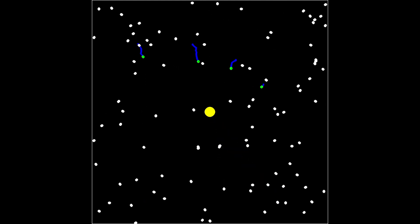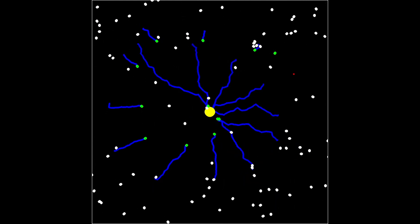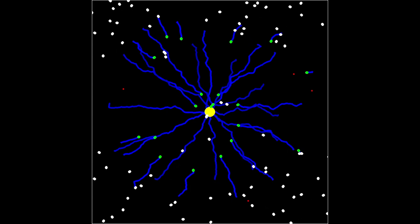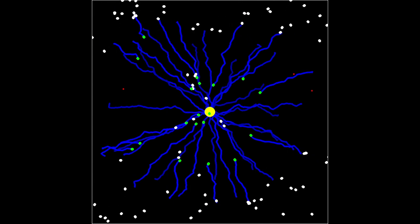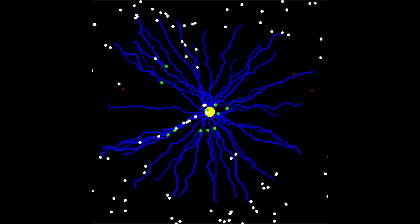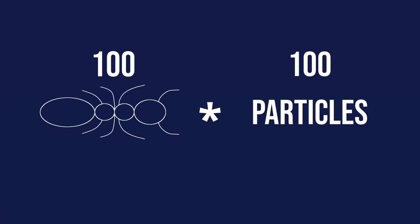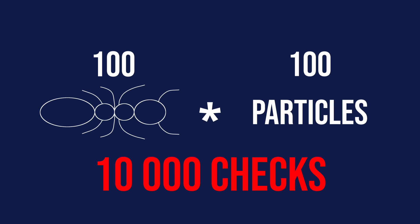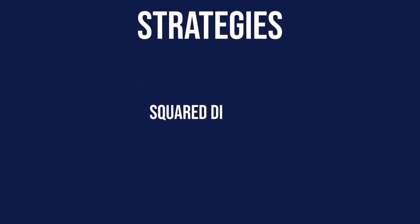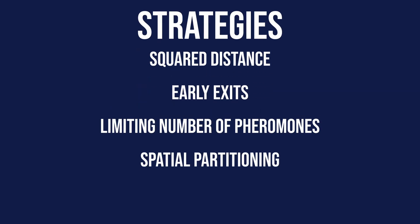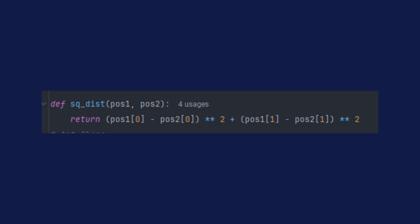Now that the ants are moving properly we can work on optimization a little bit, because the simulation gets laggy when you increase the number of ants and food. The main problem with the code is the way we check whether an ant is close to food or a pheromone — we iterate over the entire list for every ant to check the distance, even if the object is on the other side of the plane. The first thing I tried is calculating square Euclidean distance instead of the standard one, to avoid calling the square root function.